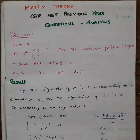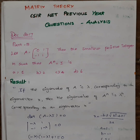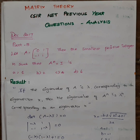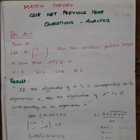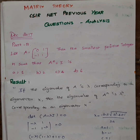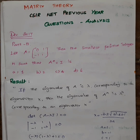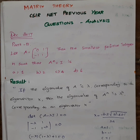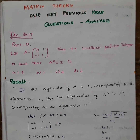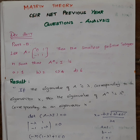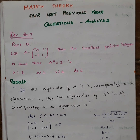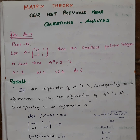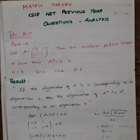Now, A^n equals I — where do we use it? We will use the Cayley-Hamilton theorem. If we have a matrix, it satisfies its own characteristic equation. Let's look at the characteristic equation and then look at the eigenvalues.